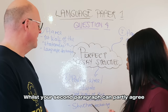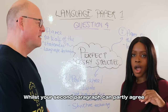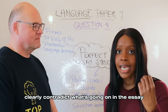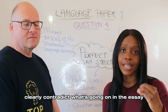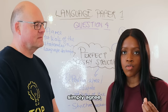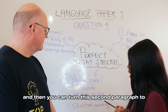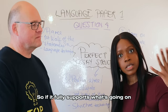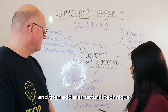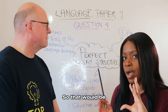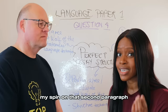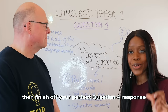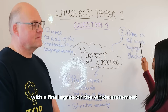I'm going to be a little controversial because my approach differs slightly. Whilst your second paragraph can partly agree, I always recommend to my students that unless the student statement clearly contradicts what's going on in the essay, simply agree. You can then turn this second paragraph to how you partly agree or fully agree depending on the statement. If it fully supports what's going on, add a structural technique — that would be my spin on the second paragraph.